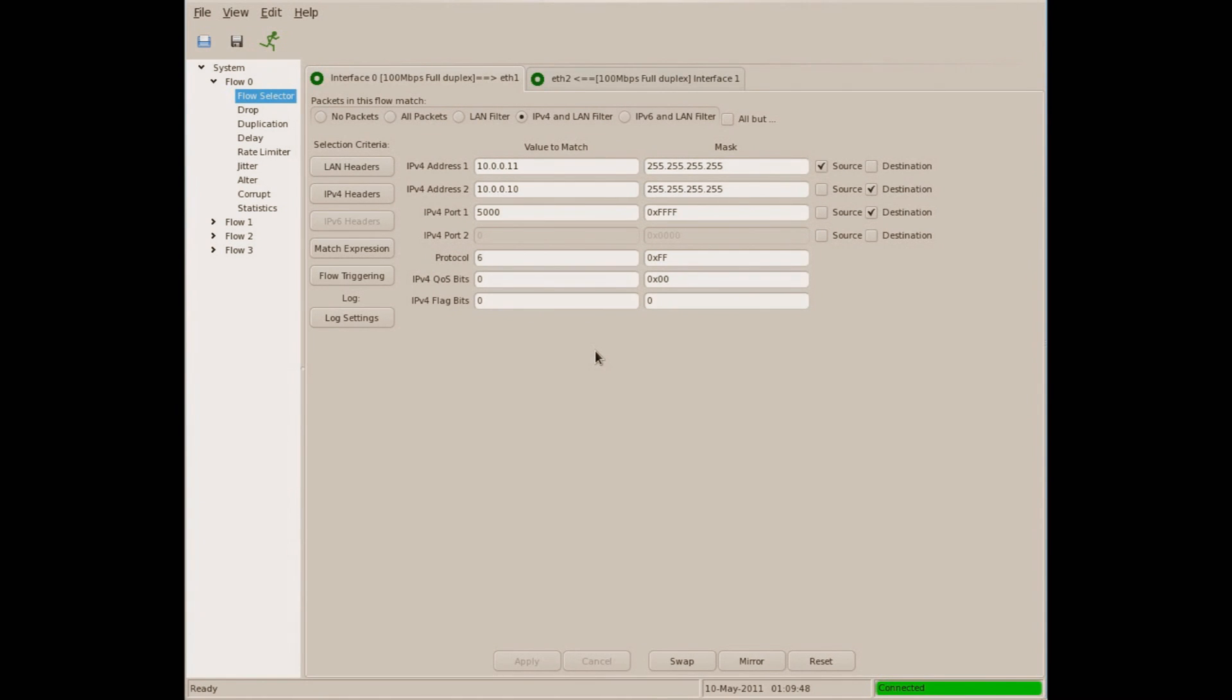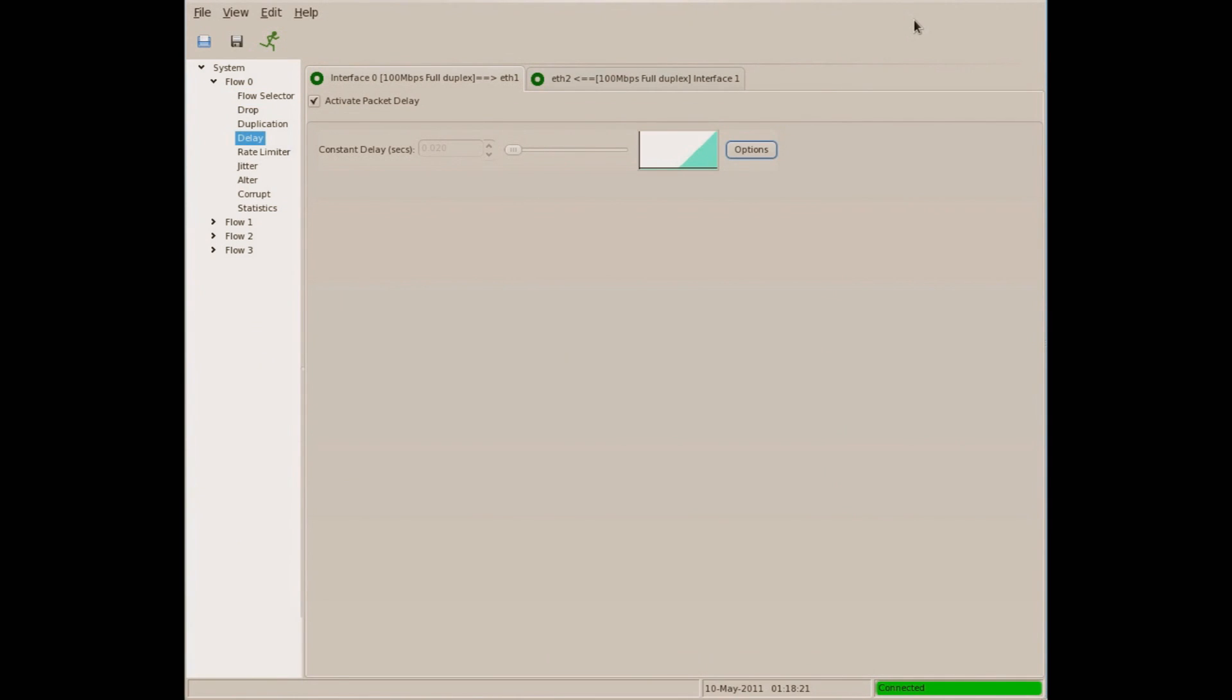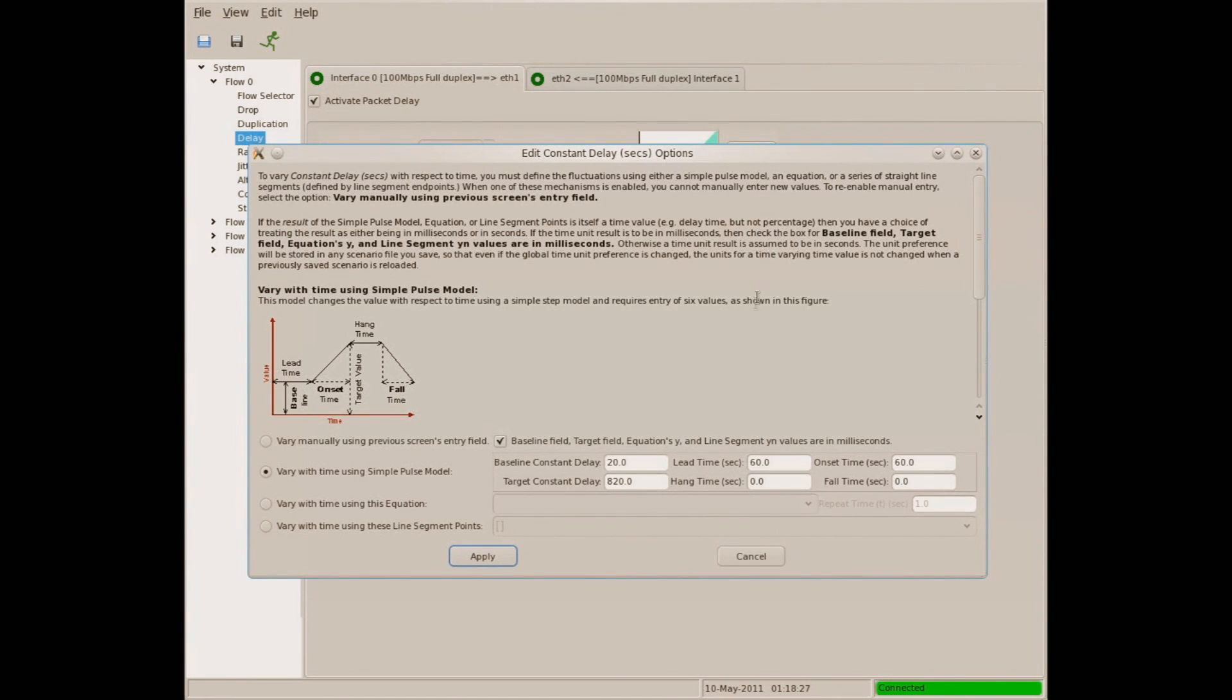What about the return packets? Maxwell can give different treatment to each direction. This screen controls how much we are going to delay the packets in the chosen TCP stream. Because I want to have a changing rate of delay, I will click this button. I've already entered the parameters that describe the sawtooth diagram we looked at a moment ago.